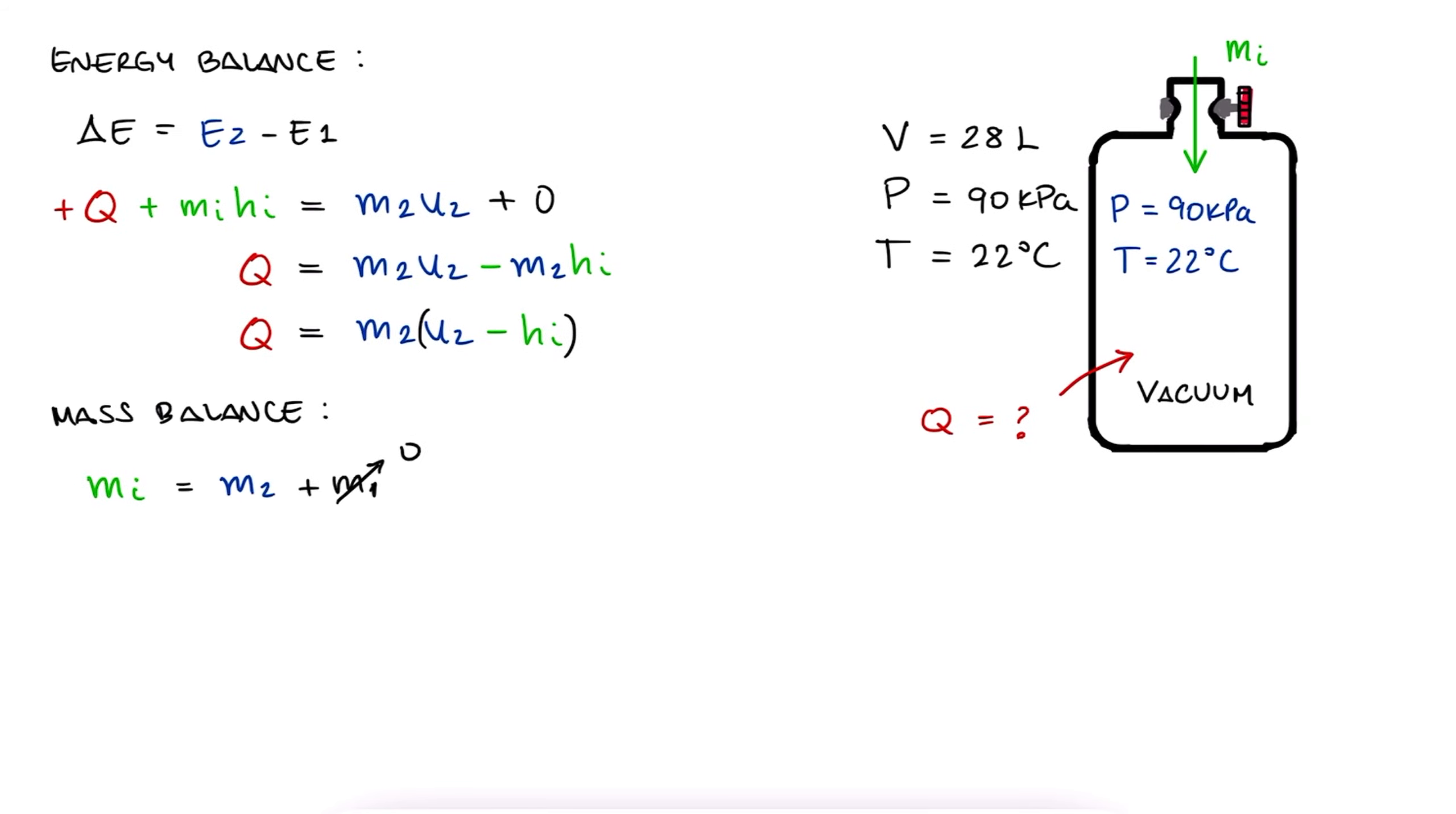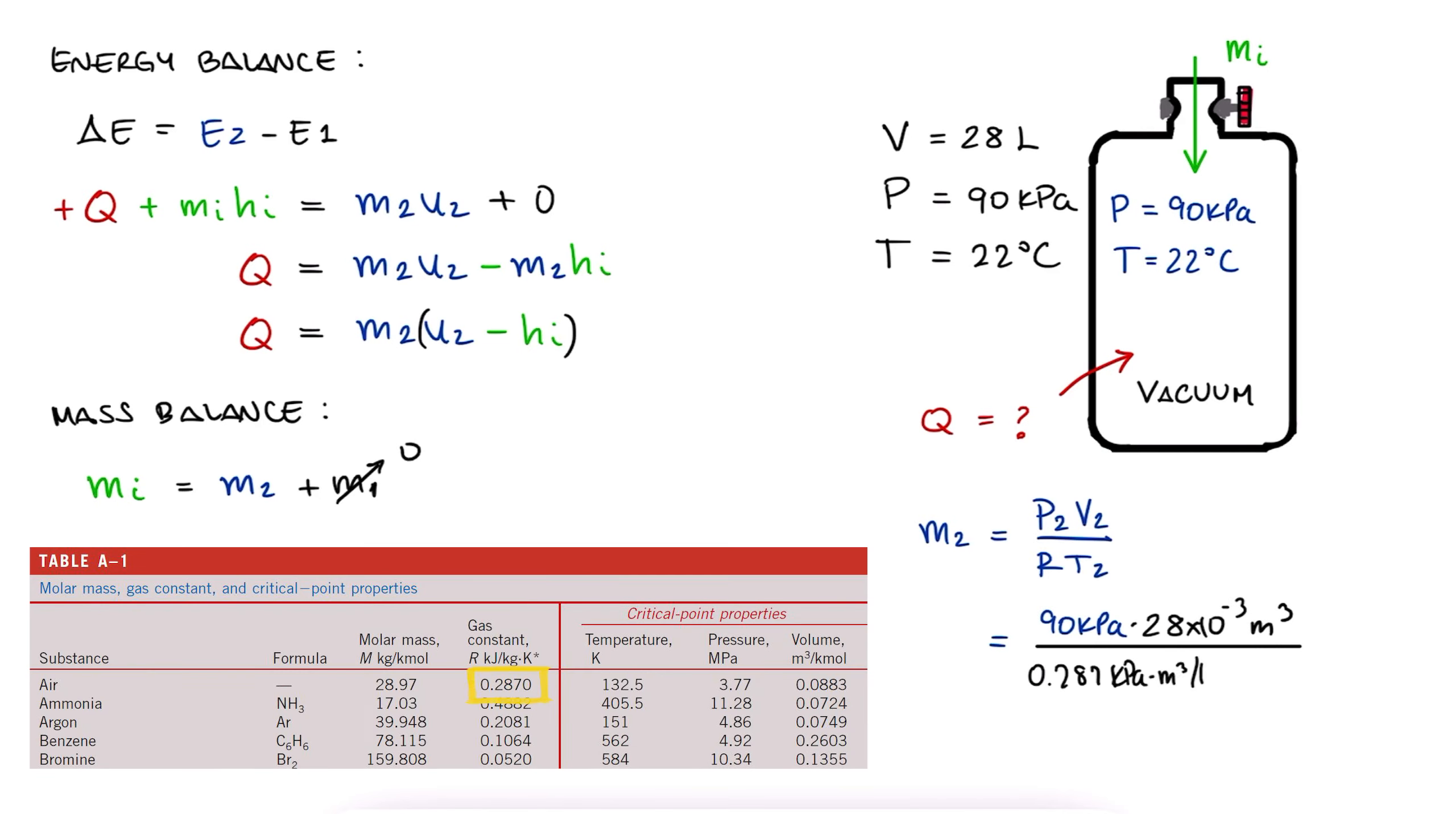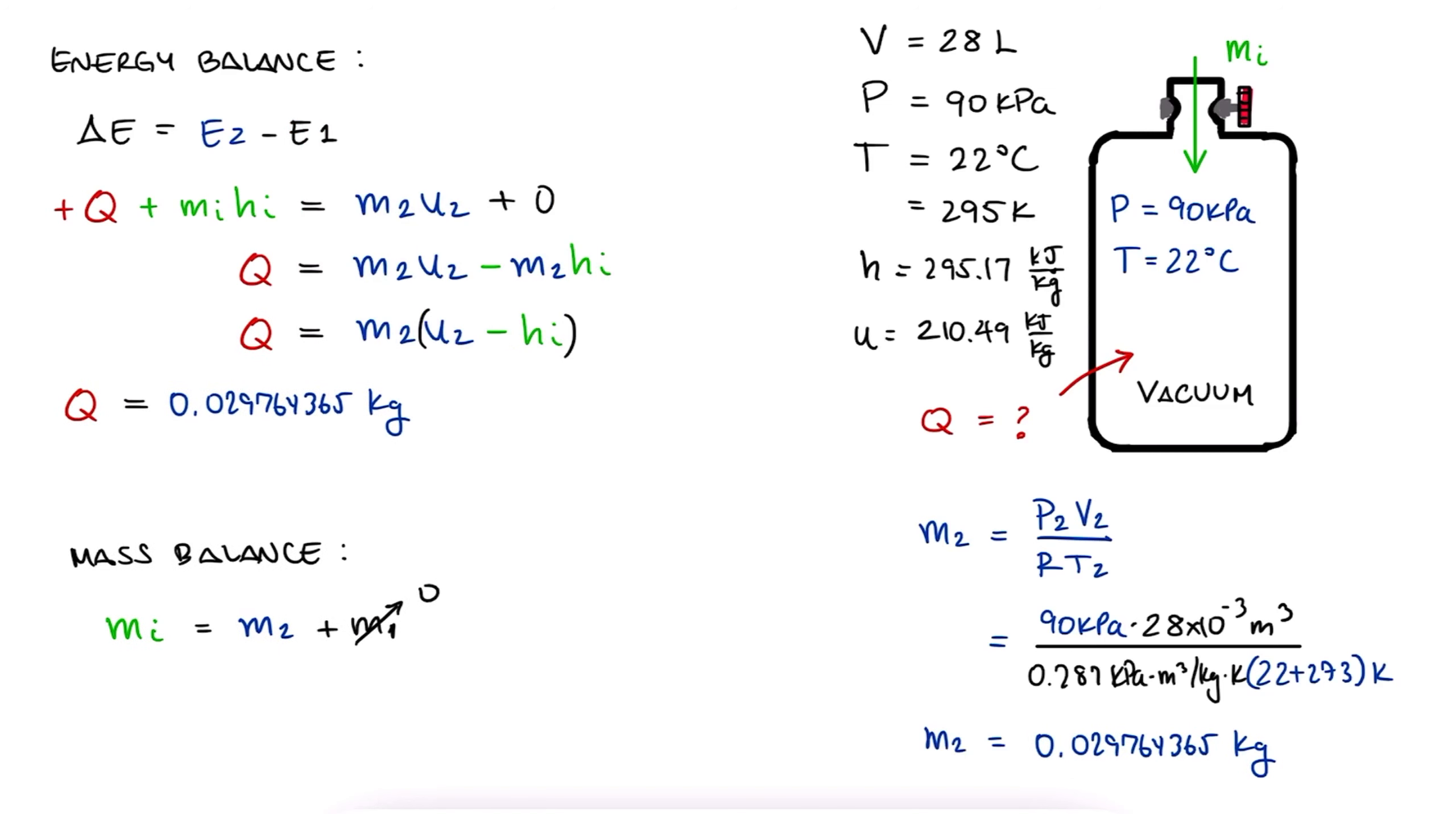Since air can be considered an ideal gas, M is PV over RT. We substitute P, V, R for air, and T in Kelvin and find the mass. We look up the properties of air at 295 Kelvin to write down the specific enthalpy and the specific internal energy. We substitute this in the energy equation and find that the heat actually has a negative value. This means that there was 2.52 kJ of heat leaving the bottle.